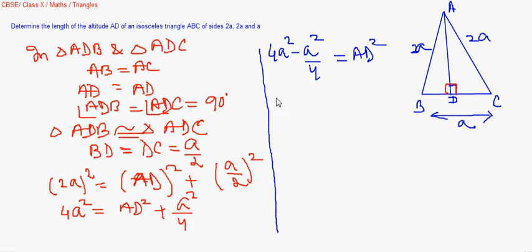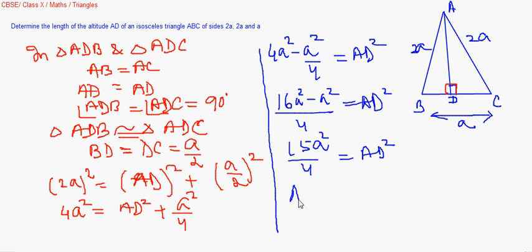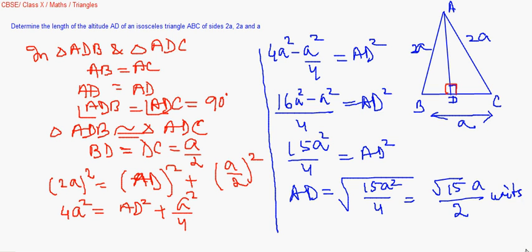So we're getting 4a squared is equal to AD squared plus a squared by 4. I carry this solving part here. That makes it 4a squared minus a squared by 4 is equal to AD squared. So it is 16a squared minus a squared by 4 equals AD squared. It's a simple solution. I'm getting 15a squared by 4 is AD squared. Therefore, making AD as root over of 15a squared by 4, so it's root 15, 15a by 2 units.